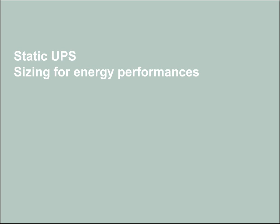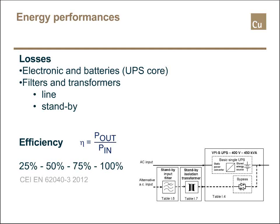Moving to energy performance, which is quite a topical issue today: losses in a UPS are mainly in the electronics and batteries — that is, in the UPS core — but also in the filters and transformer. We can have filters on the line or on the standby line.